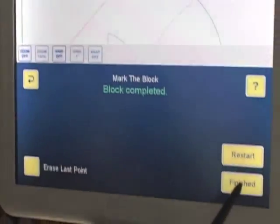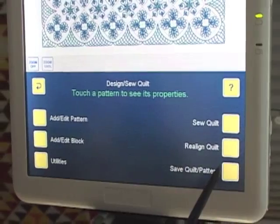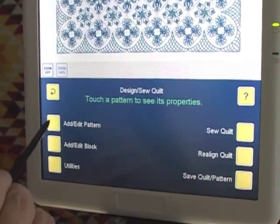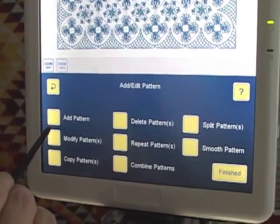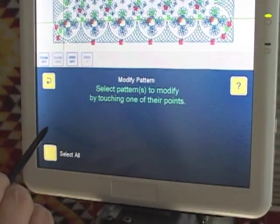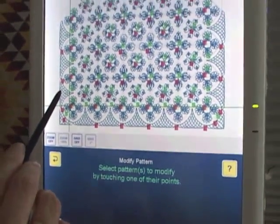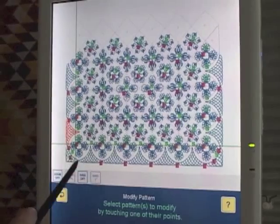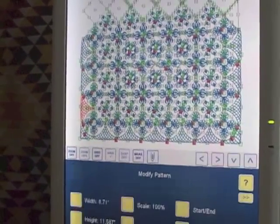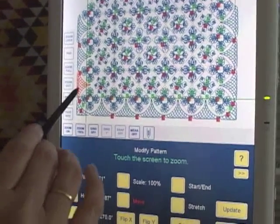So what I'm going to do is hit finished, add edit pattern, modify pattern, this is the pattern and I'm going to modify, continue, okay so now I'll zoom in again.